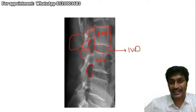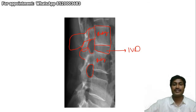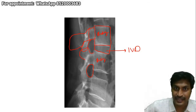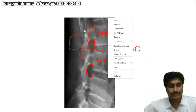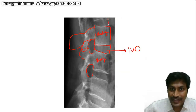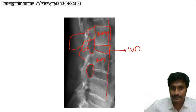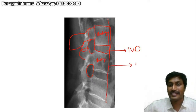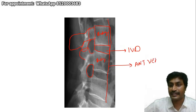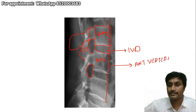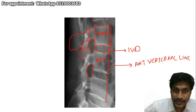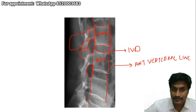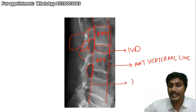Hope everyone is able to understand these things. You will have to understand two particular lines. One line is drawn joining along the anterior surface of the vertebrae. Another line is drawn along the posterior surface of the vertebrae — this is known as the posterior vertebral line.